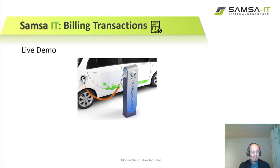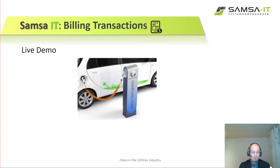Let's say you are charging your electric vehicle — this will create multiple charging transactions within a month, assuming you charge your car a couple of times. However, you do not want to get five bills a month with three euros each. Instead, you would prefer one bill a month to save paperwork. So what we do is store the transactions in Odoo and have the subscription handle the monthly billing automatically.